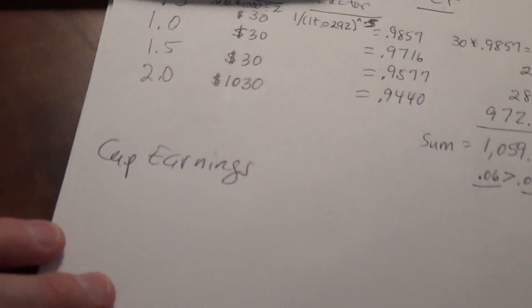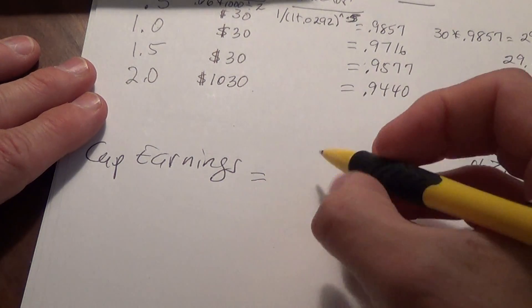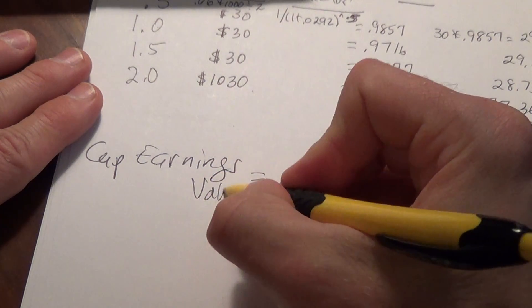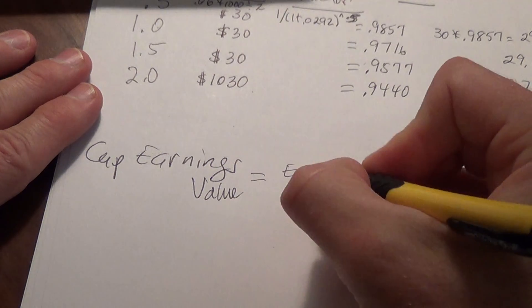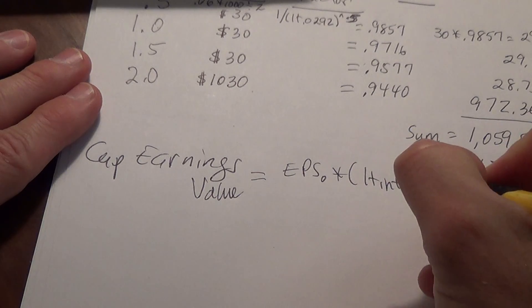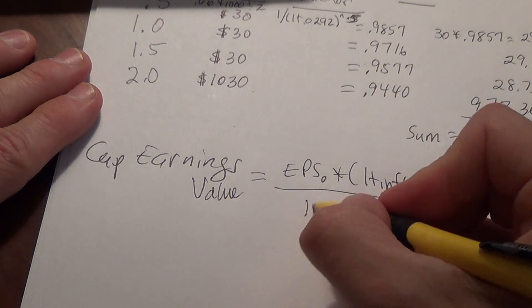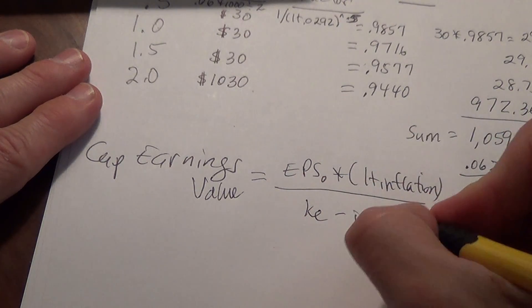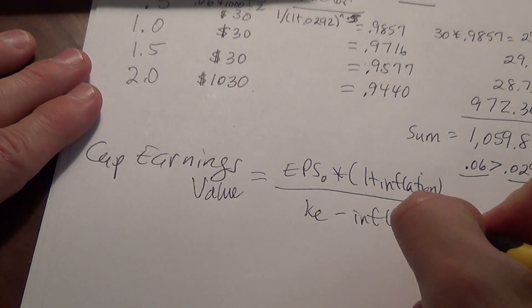When we plug all of that in, we start with the capitalized earnings. For capitalized earnings, the price, the value of the stock is going to equal earnings per share zero times one plus inflation divided by our KE minus inflation. In this case, our earnings per share was 2.62.